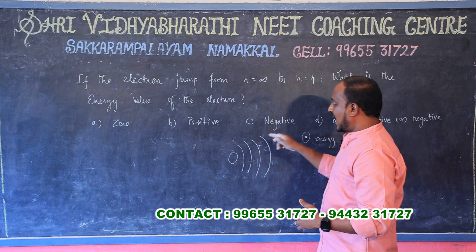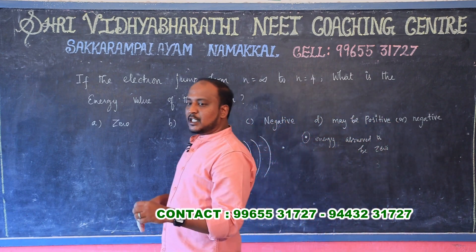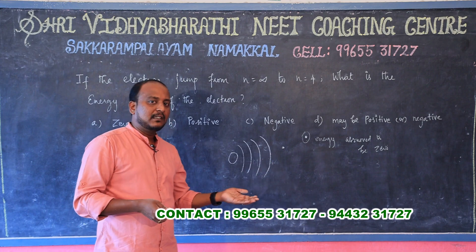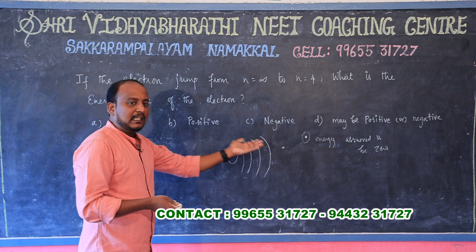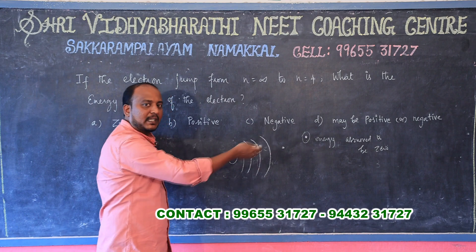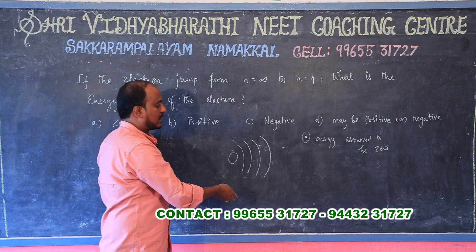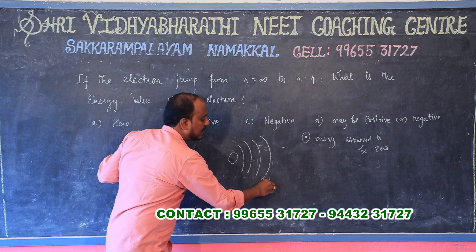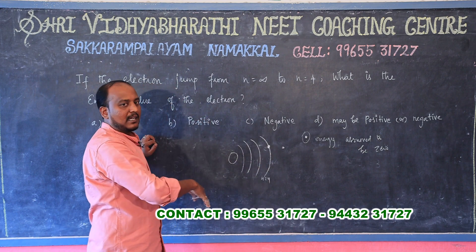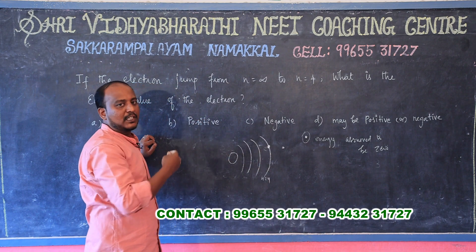Now, if the electron is attracted by the nucleus, it will come to any shell. Attracted by the nucleus means it will automatically come towards the nucleus. Consider it comes to the n equal to fourth shell, attracted by the nucleus.